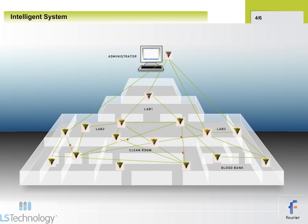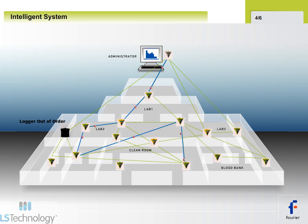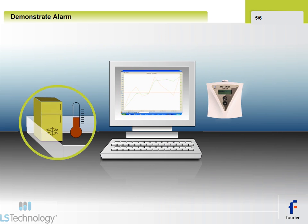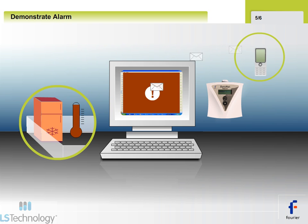The intelligent Datanet system automatically self-corrects if there is a malfunction of one unit and finds the most efficient alternative data route, ensuring 100% data receipt. When data crosses a threshold and triggers an alarm, the Datanet system automatically sends an email or SMS alert.